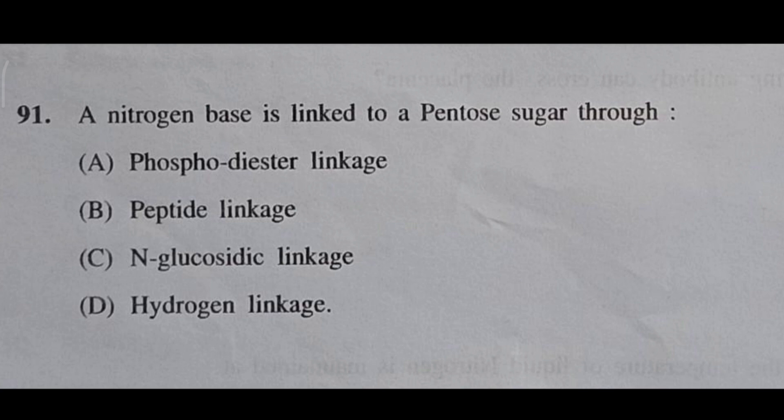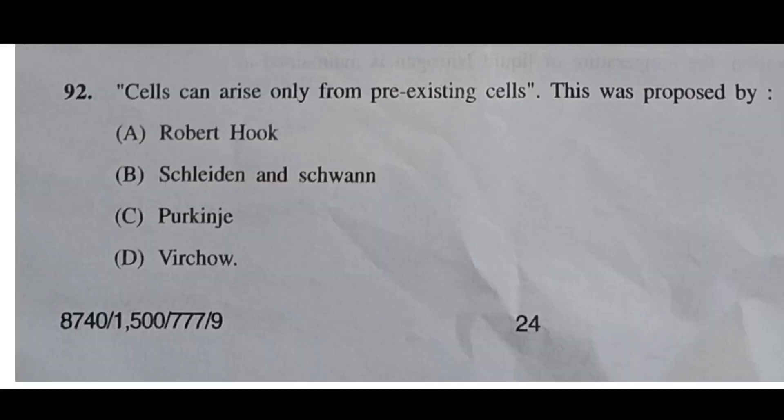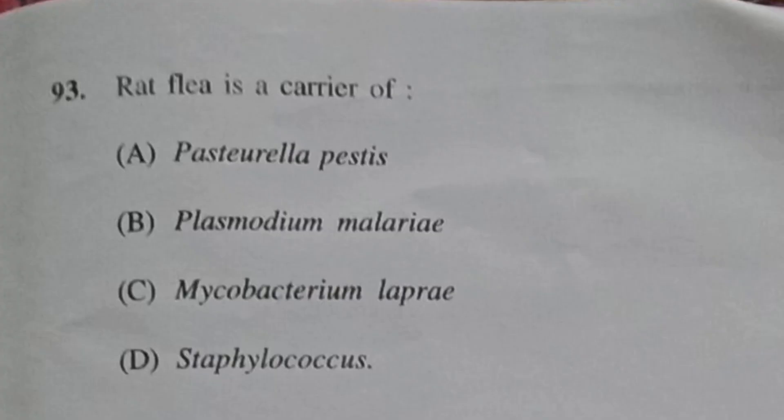Question 91: A nitrogen base is linked to a pentose sugar through — answer will be C, an N-glycosidic linkage. Question 92: 'Cells can arise only from pre-existing cells' — this was proposed by — answer will be D, Virchow.